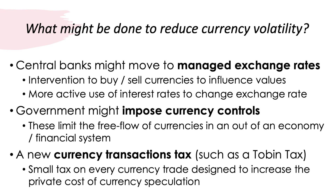What might be done to reduce currency volatility? With a free-floating exchange rate, a country simply has to go with wherever the winds move its currency. There are three main approaches. First, a central bank might move toward managed exchange rates, actively influencing the rate rather than letting it float freely. They can intervene in the market — buying their own currency using foreign exchange reserves to push the value up, or selling it to push the value down.